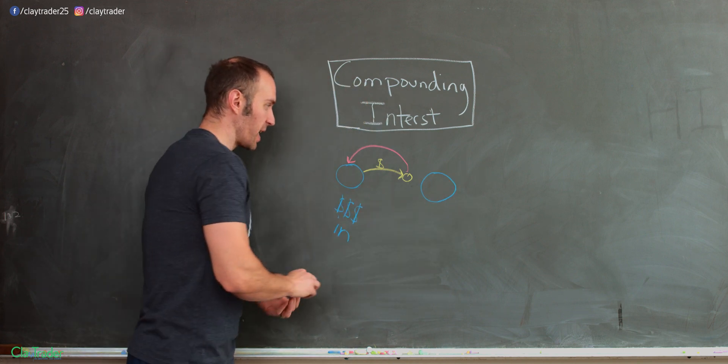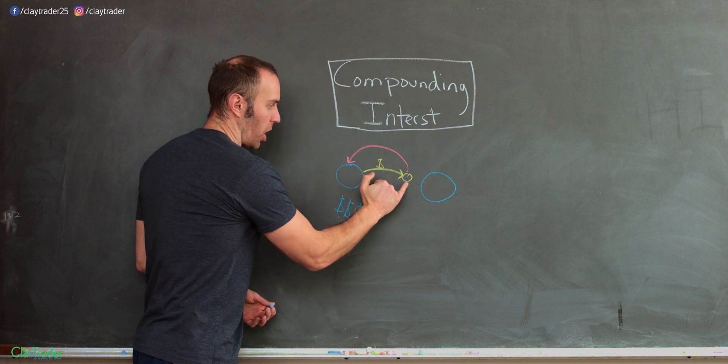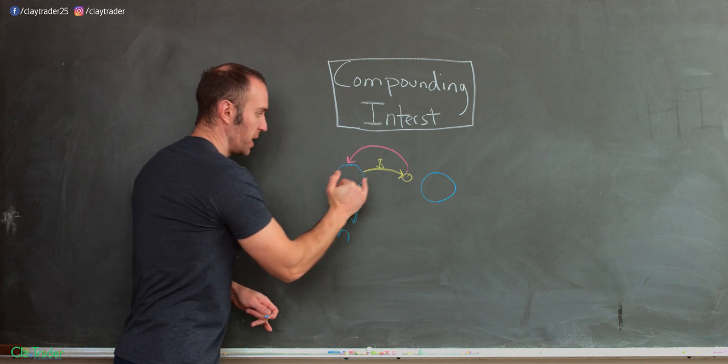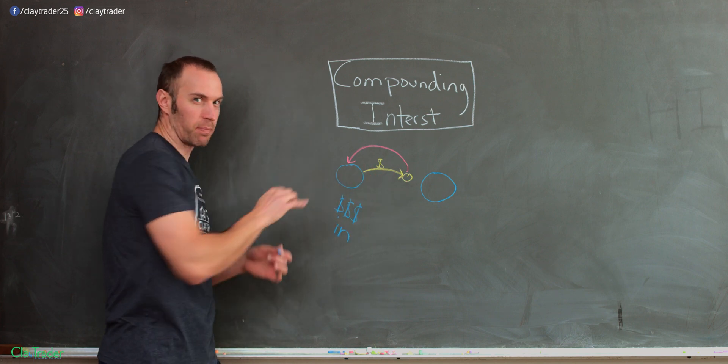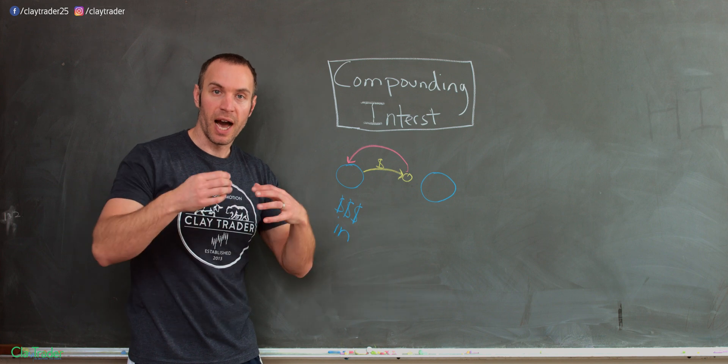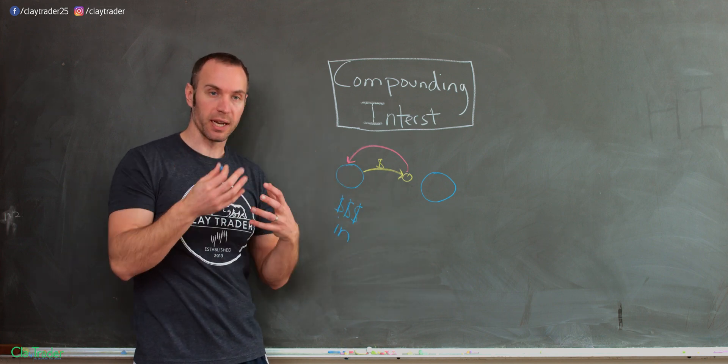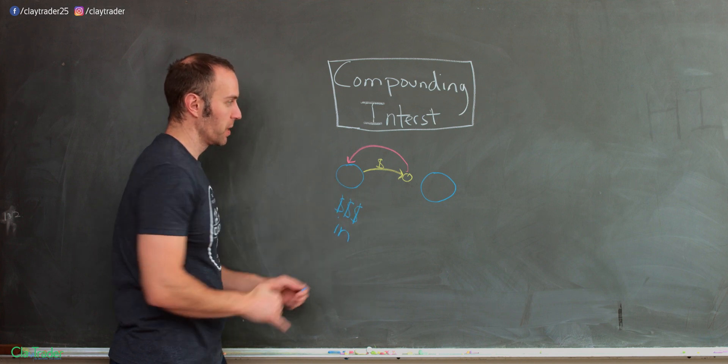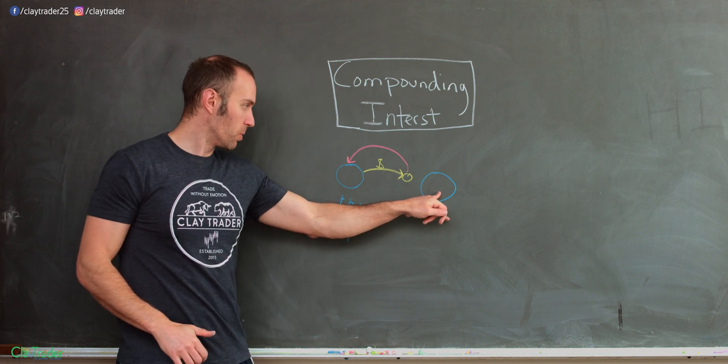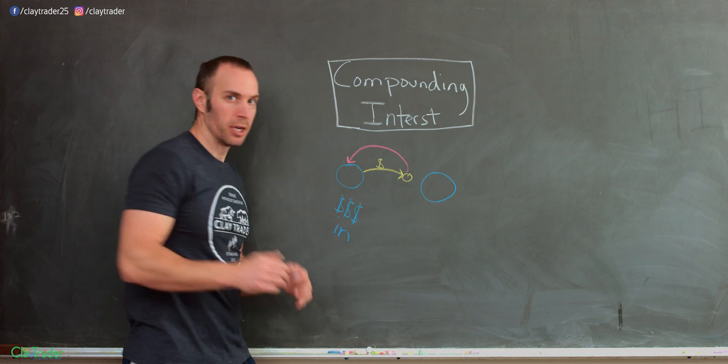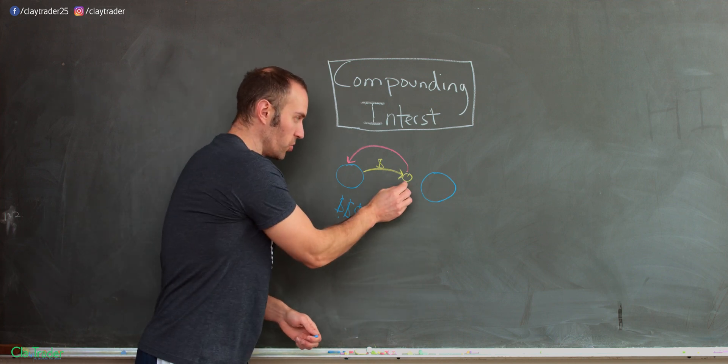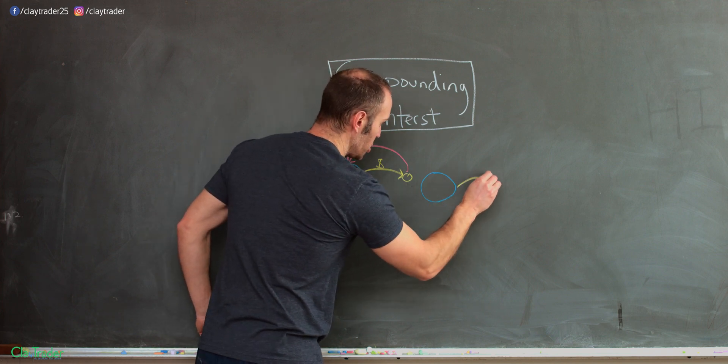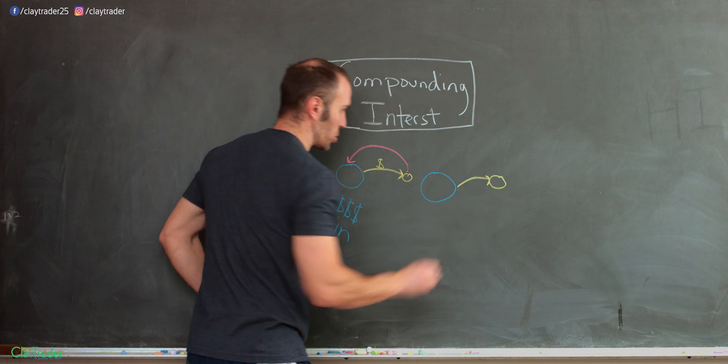Now, what did I say was the cause of the shape right there? Well Clay, you said that the size of this shape depended on the size of that shape because the more money you put in, the higher, the more dividend payments you're going to get. Exactly. So this shape is dependent on the size of that shape. But what happened to the shape now? Well, this shape just got bigger. Meaning what? What's that going to do to this shape? Well, now all of a sudden,